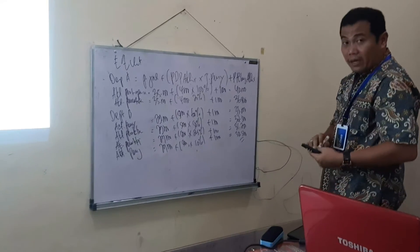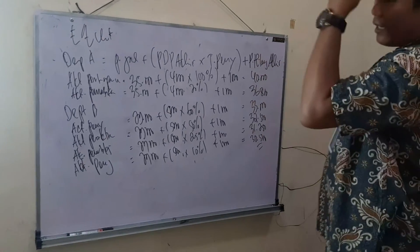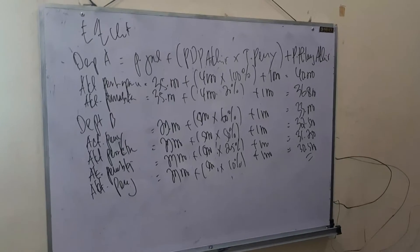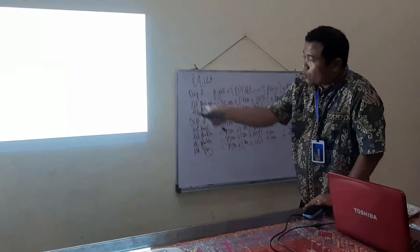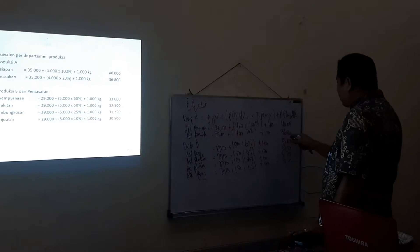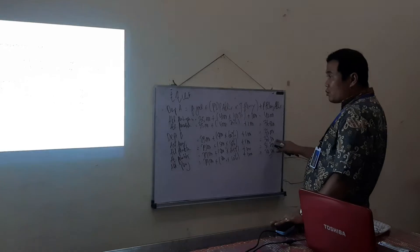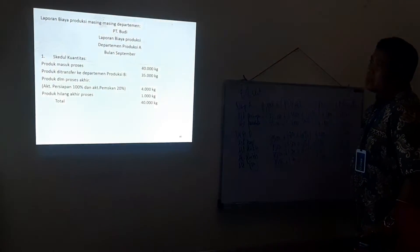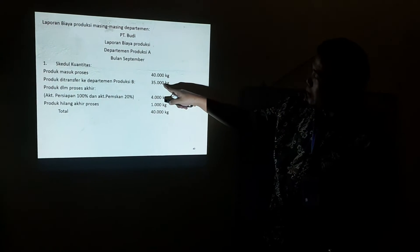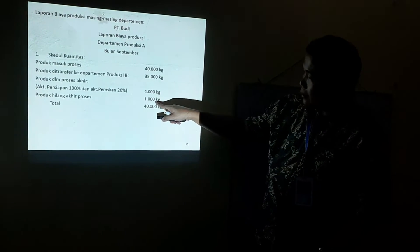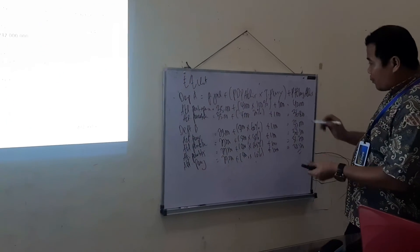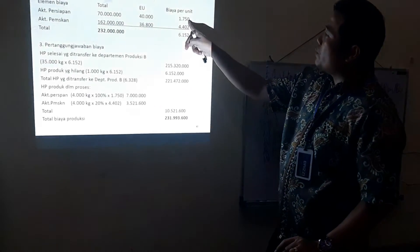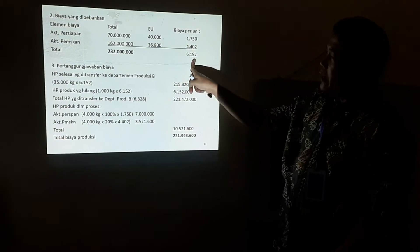Silahkan Anda hitung kembali di rumah untuk memverifikasi hasilnya. Data biaya sama seperti soal pertama hilang di awal. Equivalent unit Departemen A sudah dihitung: 40.000, 36.800, 33.000, 32.500, 31.250, dan seterusnya. Masuk ke Departemen Produksi A: yang masuk 40.000, selesai 35.000, hilang di akhir 1.000, persediaan akhir 4.000. Masukkan biaya dari soal ke equivalent unit, diperoleh harga pokok per unit.